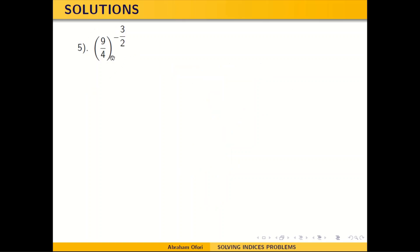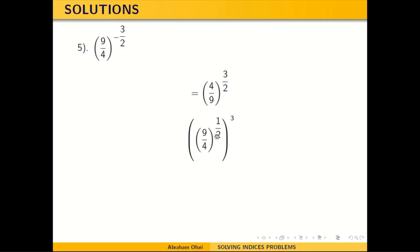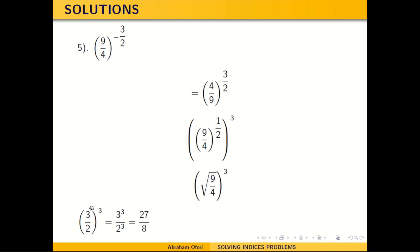This problem has a negative exponent. So you reciprocate the fraction: 9 over 4, all to the power negative 3 over 2, becomes 4 over 9 — wait — 9 over 4 to the positive 3 over 2. Now with a fractional index, this is the same as the square root of 9 over 4, all to the power 3. Square root of 9 is 3 and square root of 4 is 2, so this becomes 3 over 2 cubed, which gives 27 over 8.